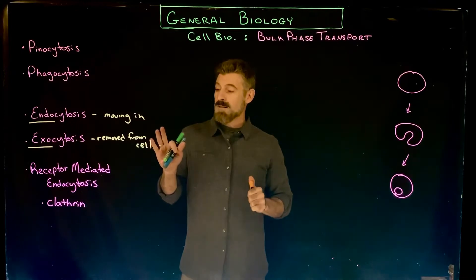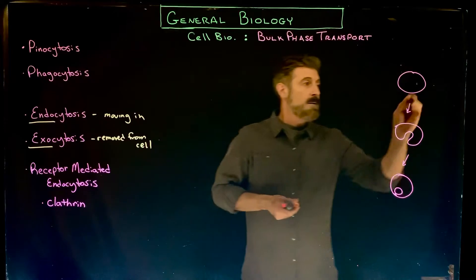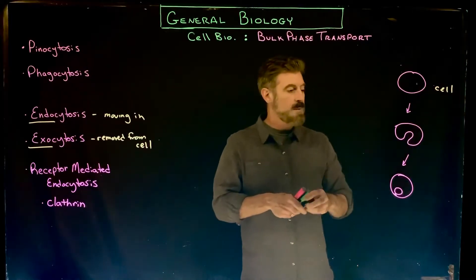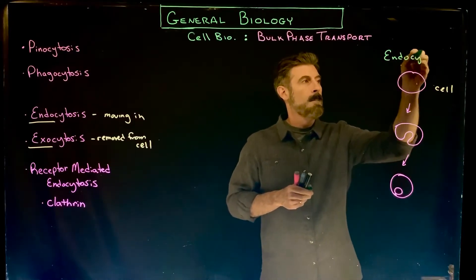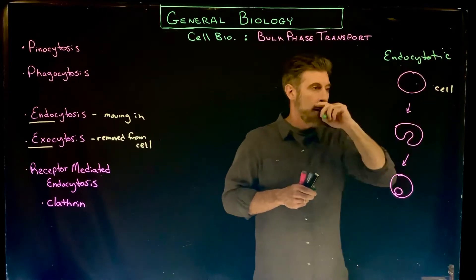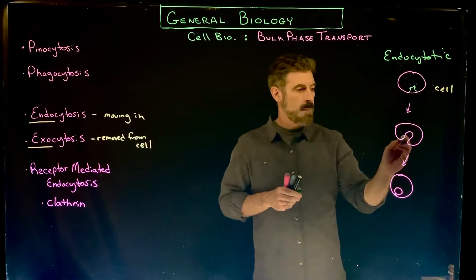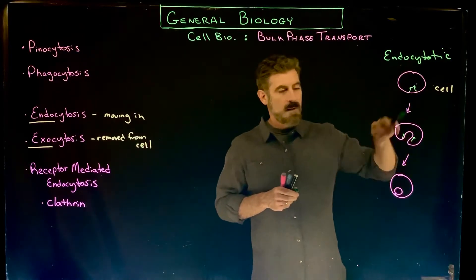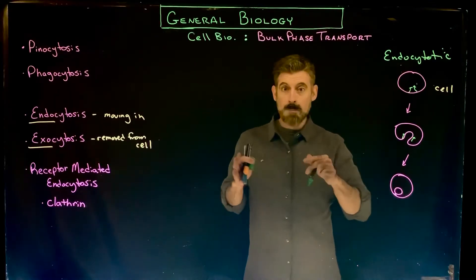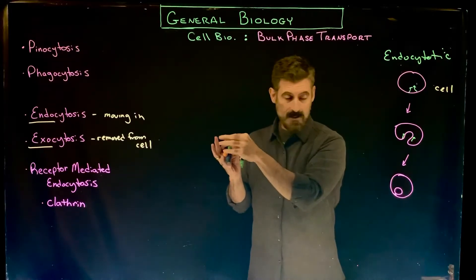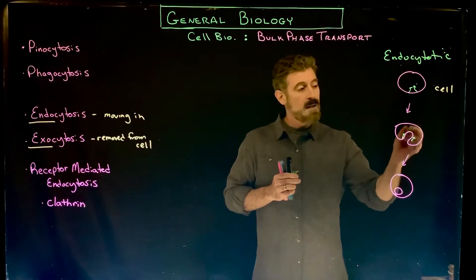Here's the overall idea. This would be an endocytotic process where the cell itself begins to move the membrane inward, and it buckles. In three dimensions, imagine pushing your finger into a balloon — it creates an indentation in the cell membrane. This is typically controlled by cytoskeletal proteins pulling on it.